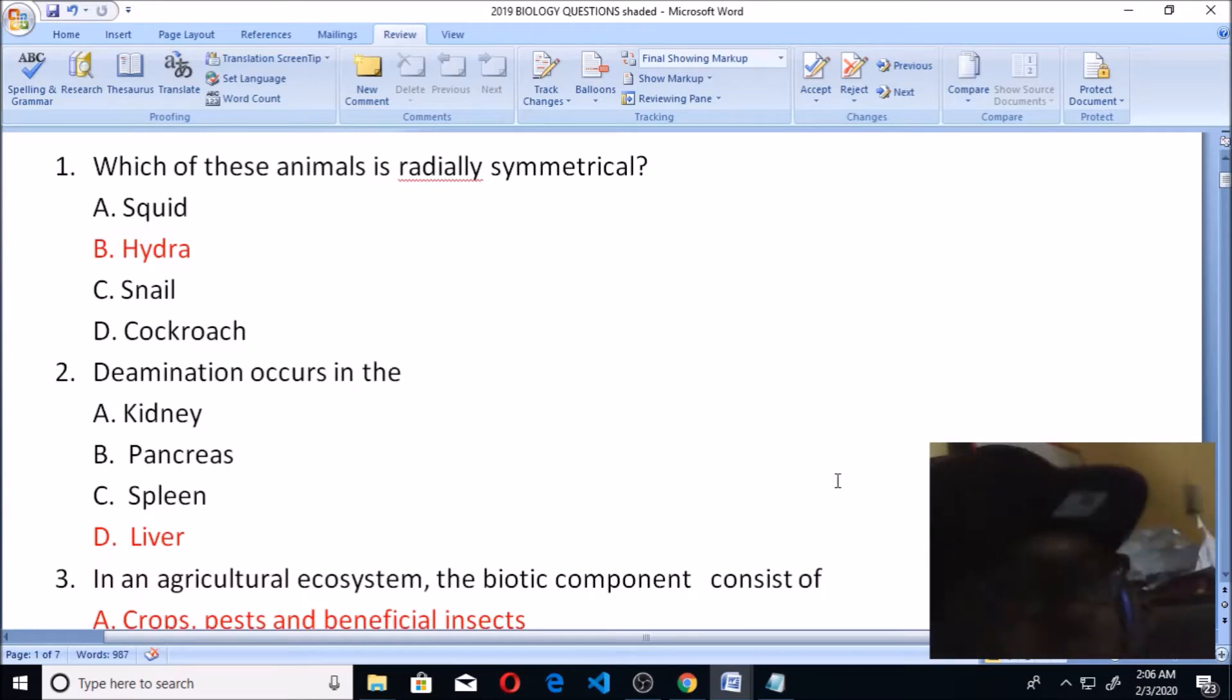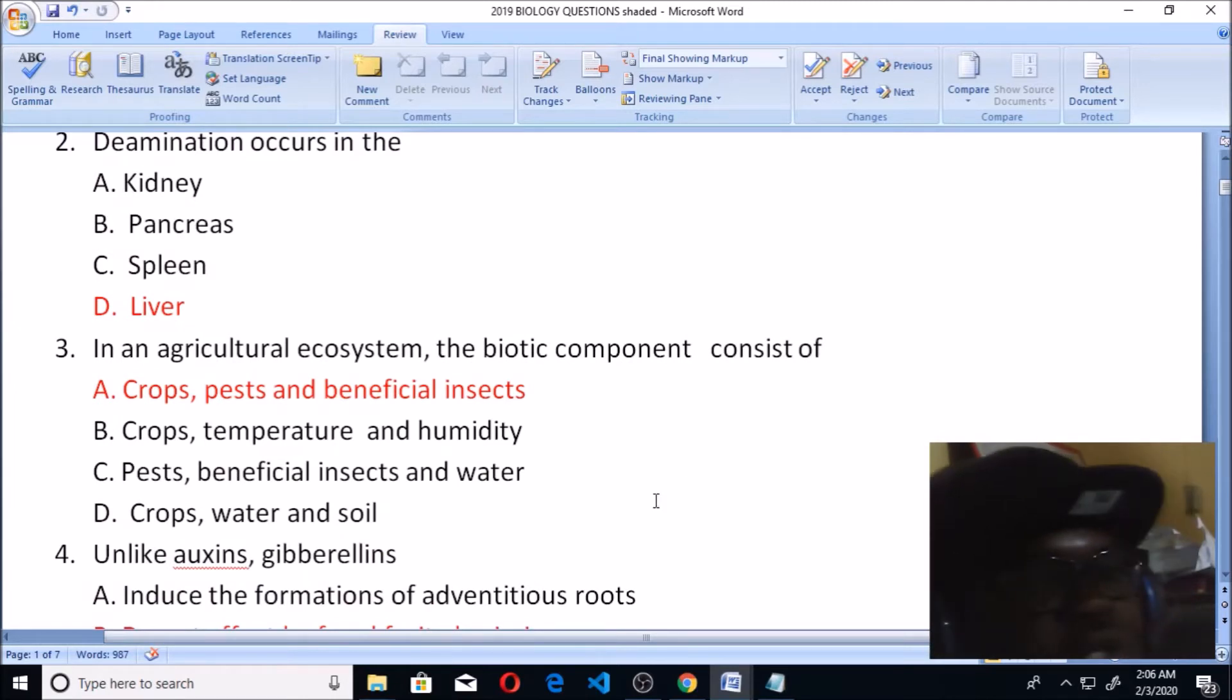Now deamination occurs in the liver - that is the answer for number two. Number three says in an agricultural ecosystem, the biotic component consists of what. Whenever you hear biotic, biotic simply means living, so you check out the option that has living things. You know that living things are plants and animals.